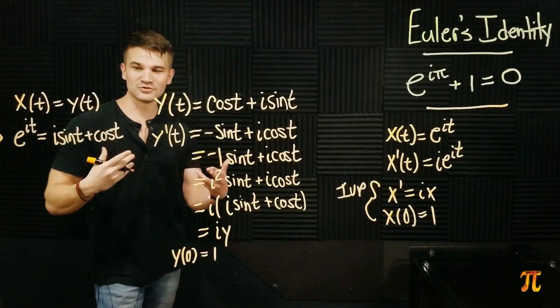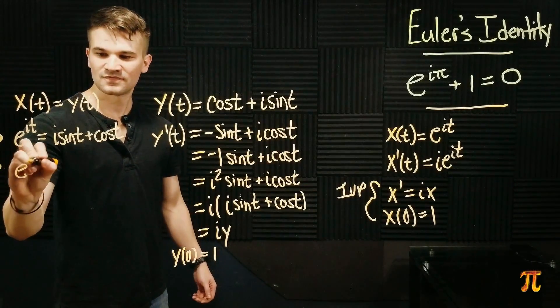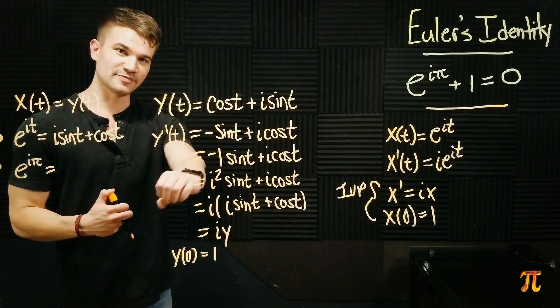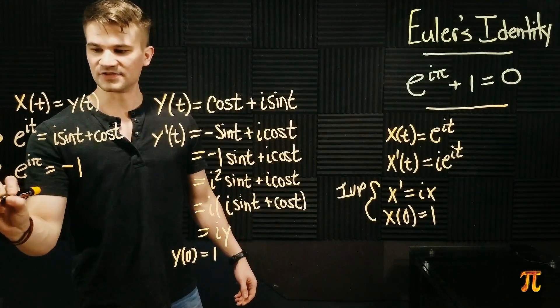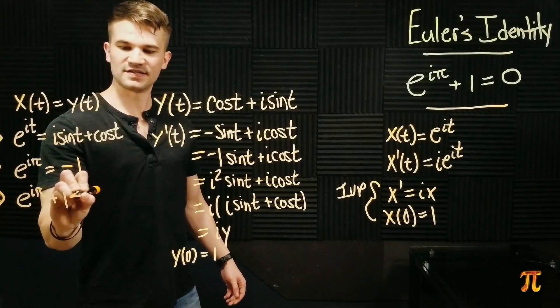And in conclusion we can plug in pi to t. i sine pi is zero and cosine pi is negative 1. And so we get Euler's identity.